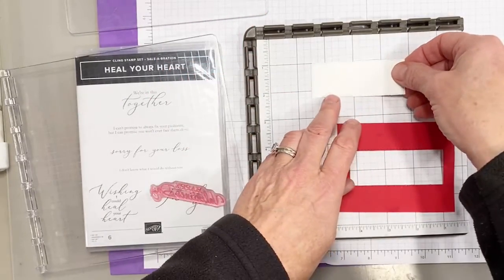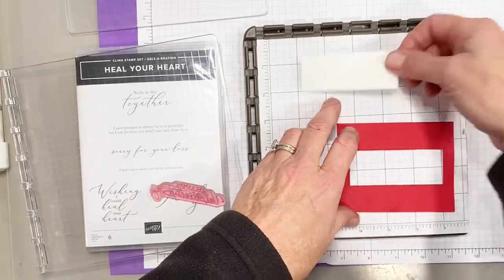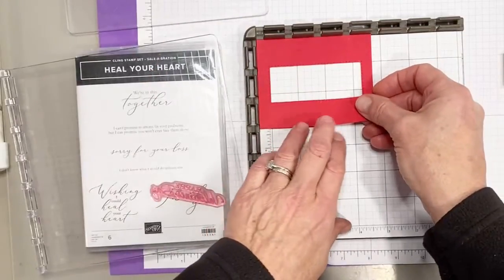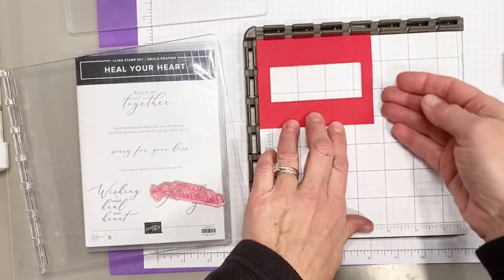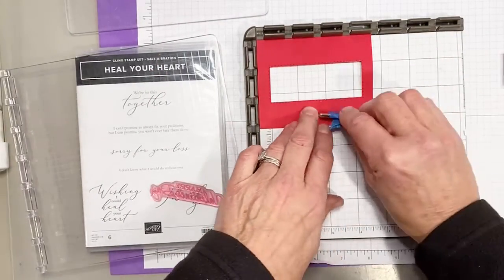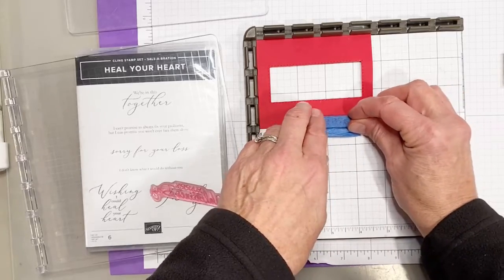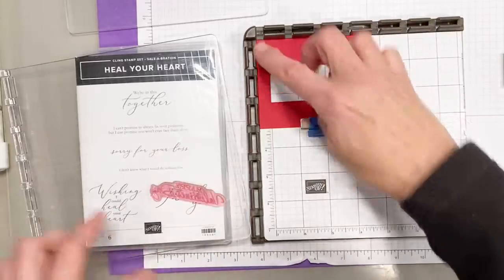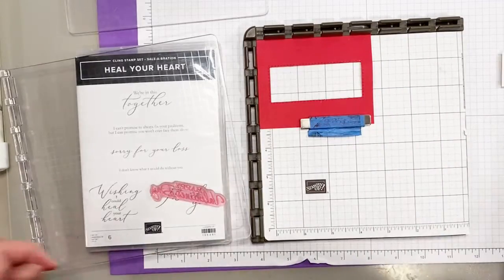Now, it would be kind of hard to always get it in the exact same place, so I cut a stitched rectangle out of a piece of paper that I can put up in the corner and hold down with my magnet. And that way, I know that I'm always getting my piece of paper in the same place.